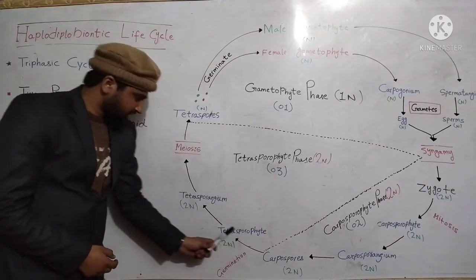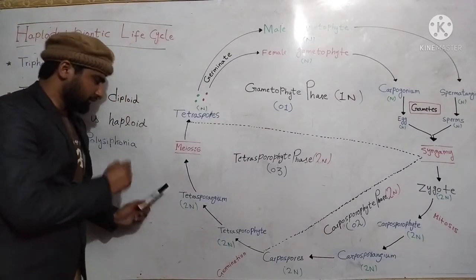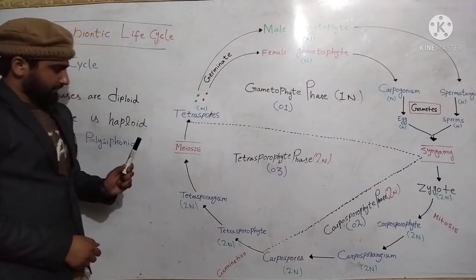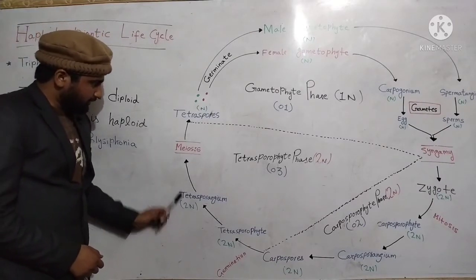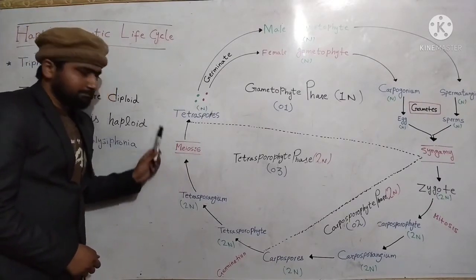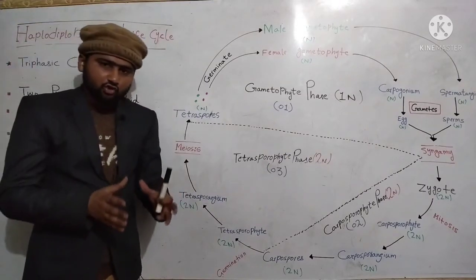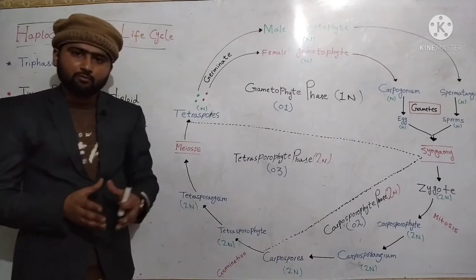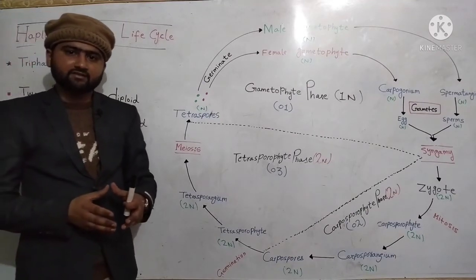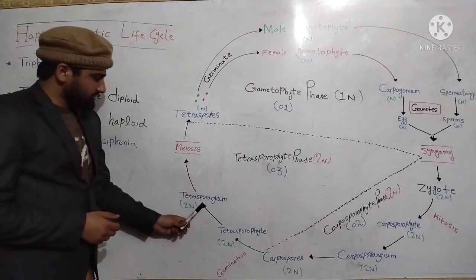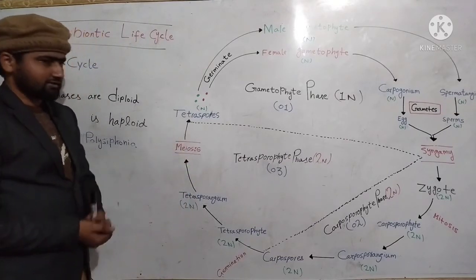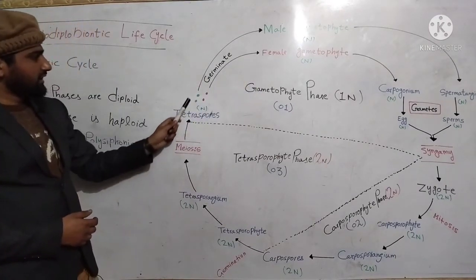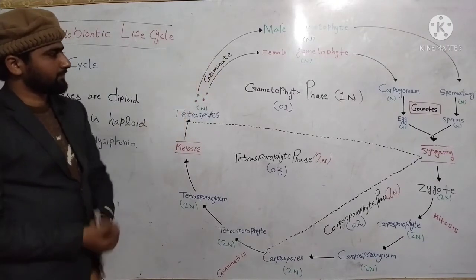Tetrasporophyte is a diploid stage and tetrasporangium is also a diploid structure. But tetraspores are haploid. Whenever we move from diploid to haploid, it is meiosis, because chromosome number becomes one-half in meiosis and remains the same in mitosis. Tetrasporangium by meiosis produces tetraspores, and these tetraspores germinate to form female gametophyte and male gametophyte.